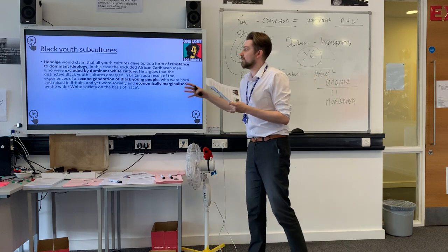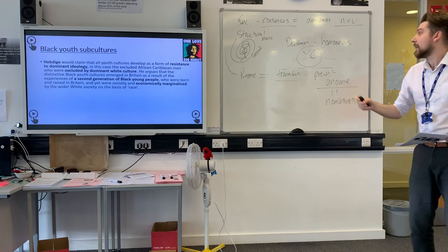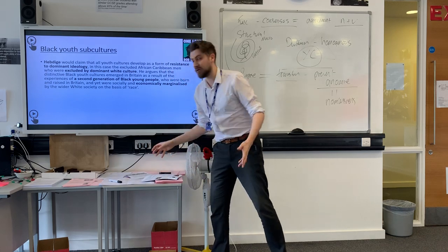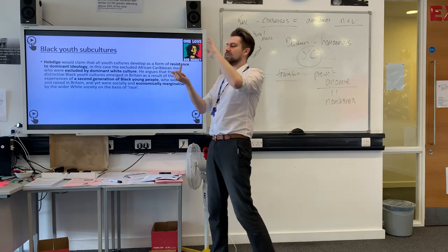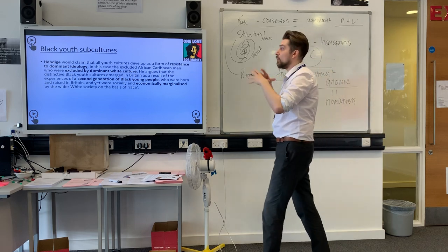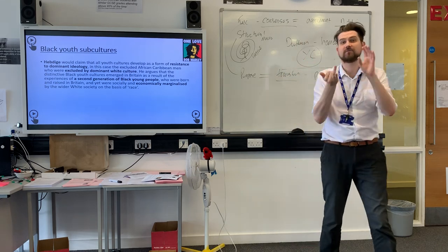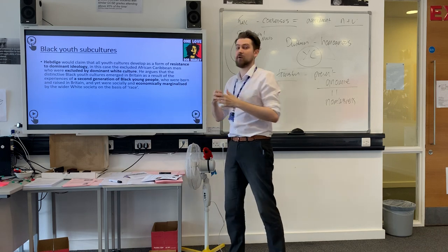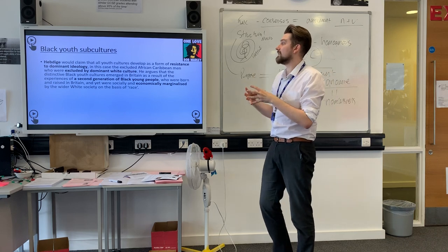This will lead to some explanations as to why we see black youth subcultures forming. Here's this word popping up again: resistance. As soon as you see that word, alarm bells should go up — we did Marxism and resistance, we've done feminism and resistance, and now we're going to look at ethnicity and resistance. For a Marxist it's resistance to capitalism, for a feminist it's resistance to the patriarchy, and when sociological research turns to ethnic minorities and black people, it is resistance to forms of racism.